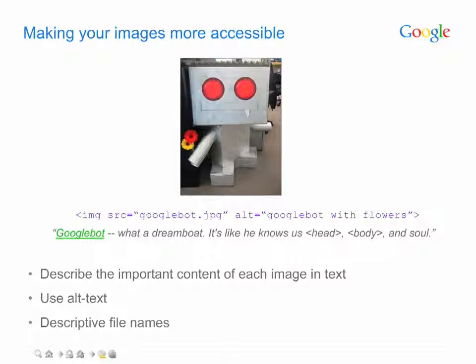For example, use 'Googlebot.jpg' instead of 'photo.jpg'. By annotating your images in these ways, you're not only helping sight-impaired users who may be accessing your site with a screen reader, but you're also giving Google a better understanding of the images and improving the chances of your images showing up for relevant queries in Google Image Search.